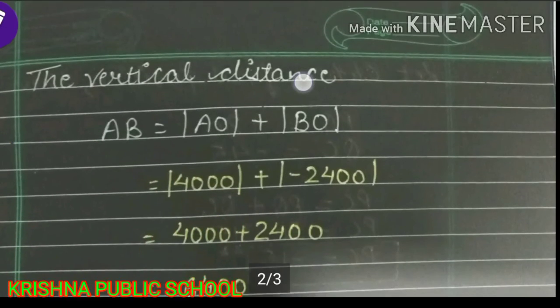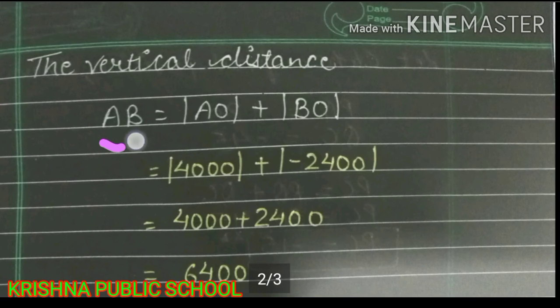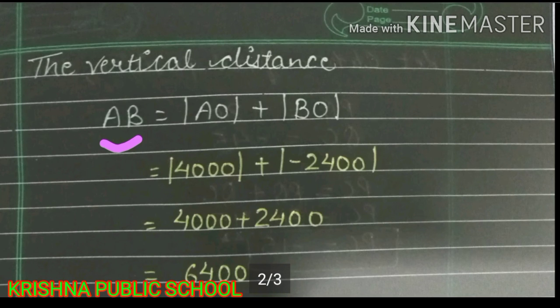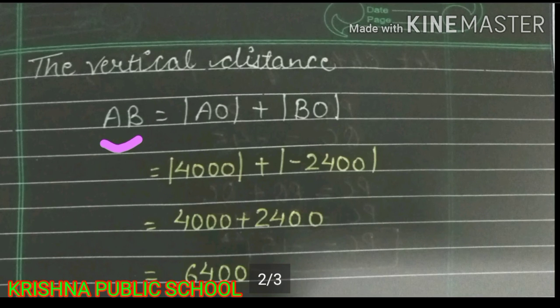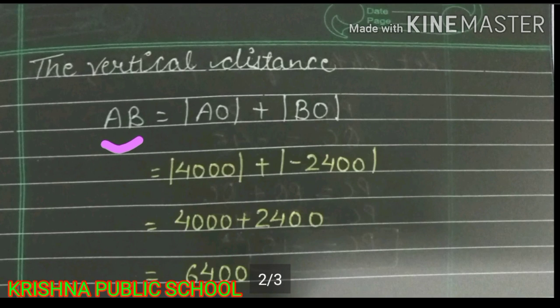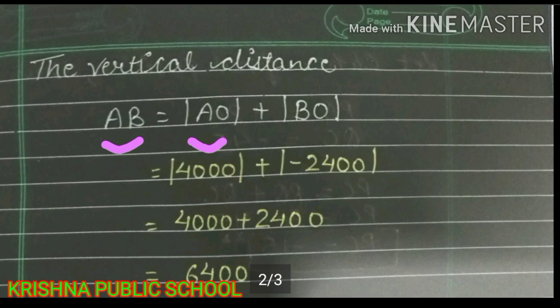Now what is the vertical distance between these two? The vertical distance AB. We have cloud position A, submarine position B, and O is the origin at sea level. What is the vertical distance? AB equals AO plus BO.